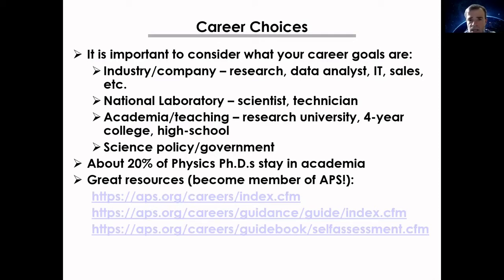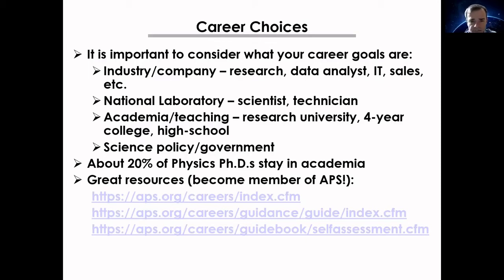When considering graduate school, it's important to think about your career goals — industry, national laboratory, academia, teaching, or science policy. With a PhD, you can go into any of these areas. About 20% of physics PhDs stay in academia — a significant number but not the majority. The APS has great websites with career resources if you're interested.